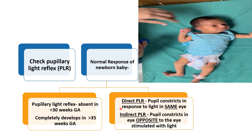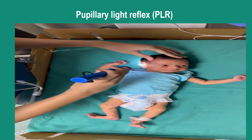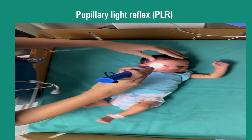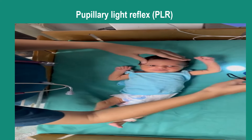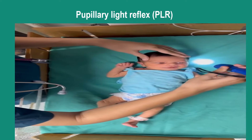We consider the direct pupillary light reflex when the pupil constricts in response to the light in the same eye, and when the pupil constricts in the opposite eye it is labeled as an indirect pupillary light reflex. Here in this video you can see how to perform the pupillary light reflex and check the response to the light.